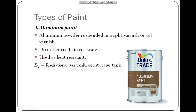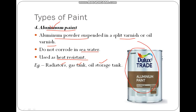Next is aluminium paint. Aluminium powder is suspended in spirit varnish or oil varnish. It does not corrode in sea water, so if you are constructing houses or buildings near the sea, you could use aluminium paint for better protection. It is also used as a heat-resistant paint for radiators, gas tanks, and oil storage tanks. You can see the Dulux red aluminium paint here.